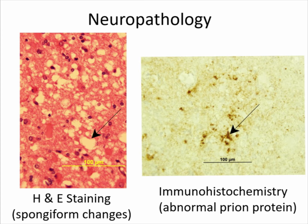If you look at the brain tissue, you can look at it in a variety of ways. One way is called H&E staining, where the brain develops holes or vacuoles, which gave its original terminology of spongiform encephalopathy because the brain resembles spongy tissue. You can also do immunohistochemistry — take an antibody that binds to the abnormal prion protein and stain for it. Those brown deposits in the right-hand slide are the abnormal prion protein itself. When someone goes for autopsy at the surveillance center, both of these are done to screen for prion disease.